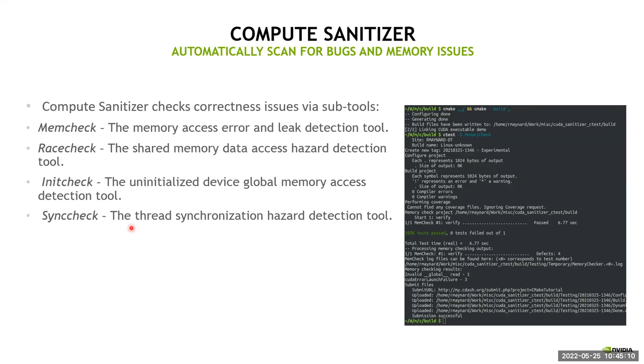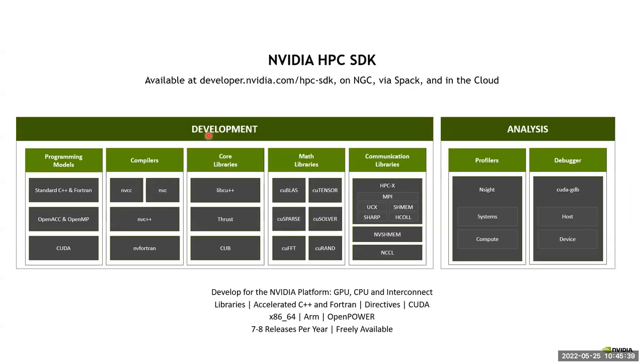And then lastly, Compute Sanitizer. If you ever used CUDA MemCheck in the past, Compute Sanitizer is the new CUDA MemCheck. It enables you to check for things like accessing arrays out of bounds, leaking, having race conditions in shared memory, accessing uninitialized data, or forgetting to synchronize your threads. So great tool. If your code fails, I'd say this is really the tool to hit first to try to understand exactly what's going on.